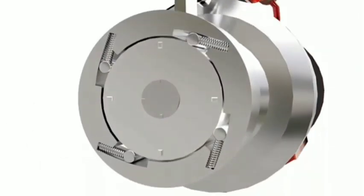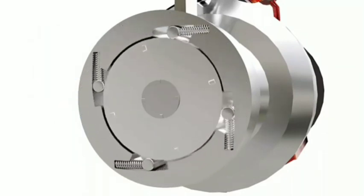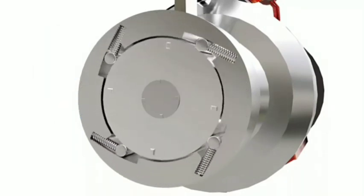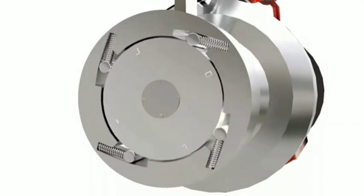The one-way clutch has a set of rollers installed between the outer and inner races. When the outer race is rotated by the motor, the rollers get trapped and transfer power to the pinion. As soon as the engine is started and drives the pinion at high speed, the rollers get released and power transfer is stopped.